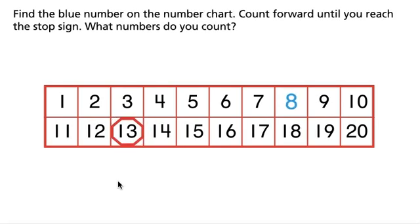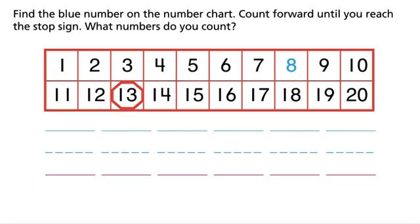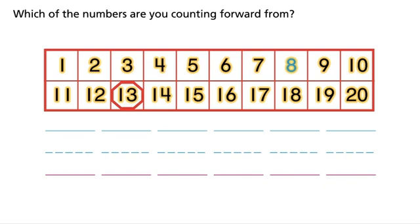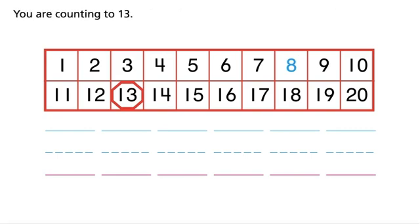Find the blue number on the number chart. Count forward until you reach the stop sign. What numbers do you count? Which of the numbers are you counting forward from? You are counting forward from 8. Which number are you counting to? You are counting to 13.